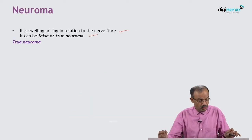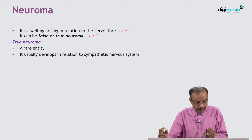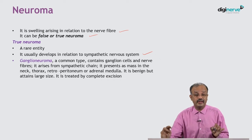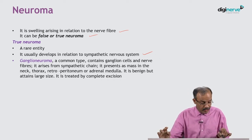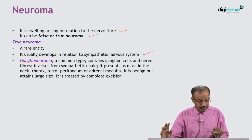What is true neuroma? It is a rare entity. It usually develops in relation to the sympathetic nervous system. There are two types under true neuroma. One is ganglioneuroma, which is the more common type. It contains ganglion cells and nerve fibers, and it arises from the sympathetic chain. It presents as a mass in the neck, thorax, retroperitoneum, or adrenal medulla. It is usually benign but can be very large.